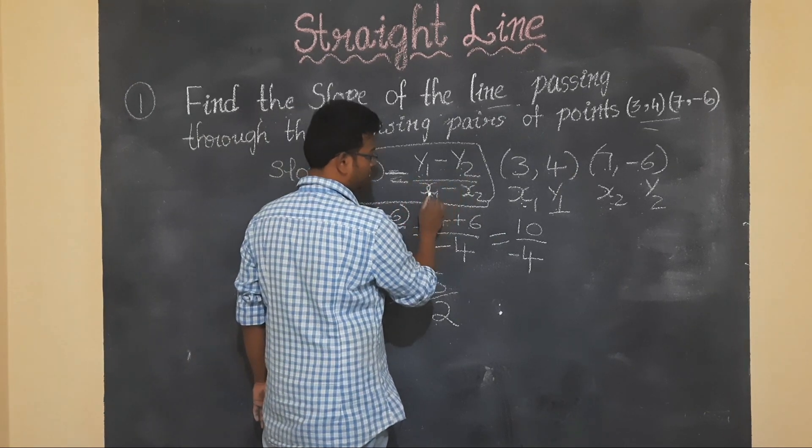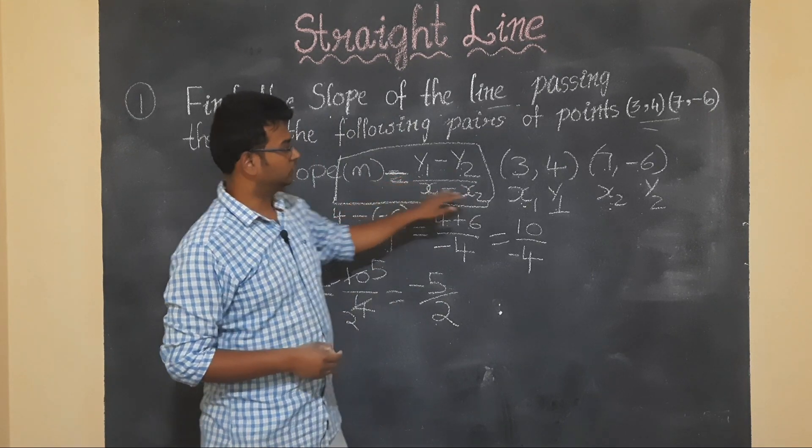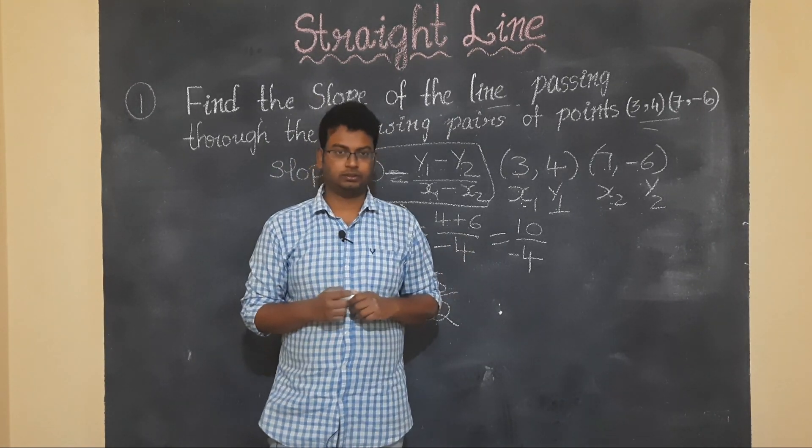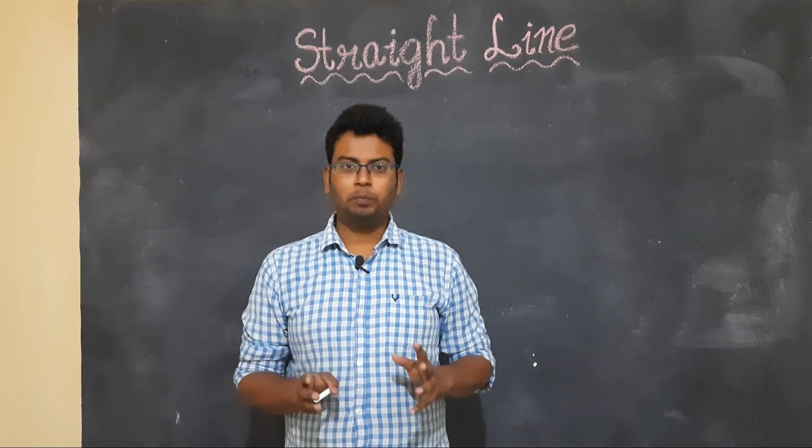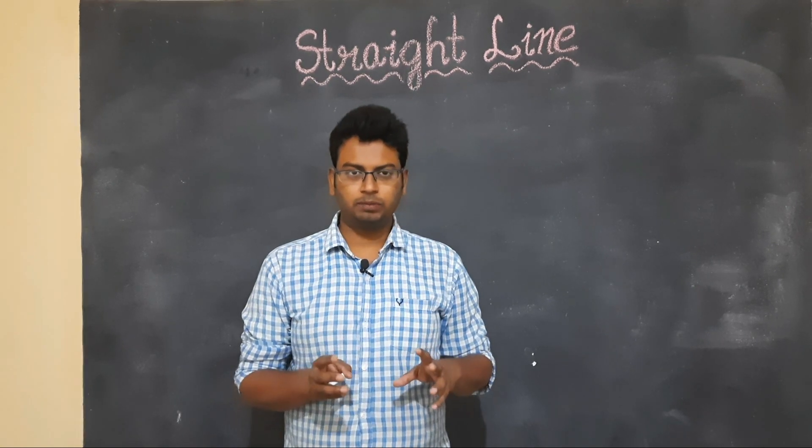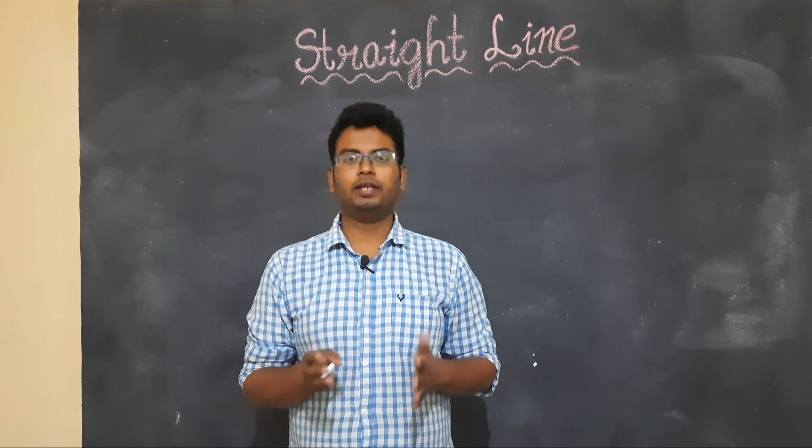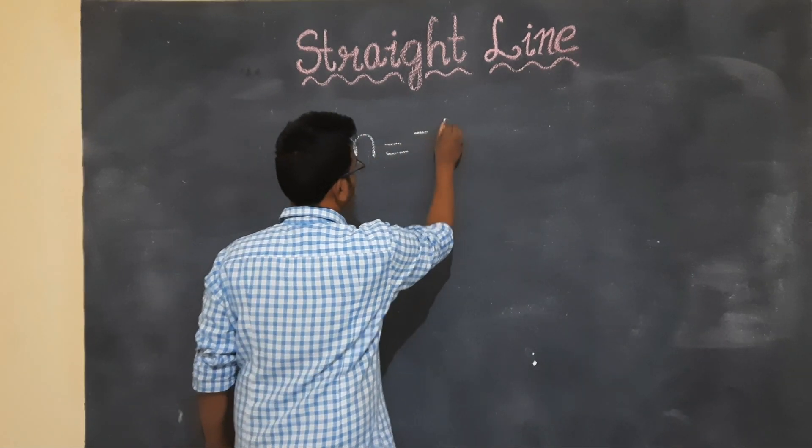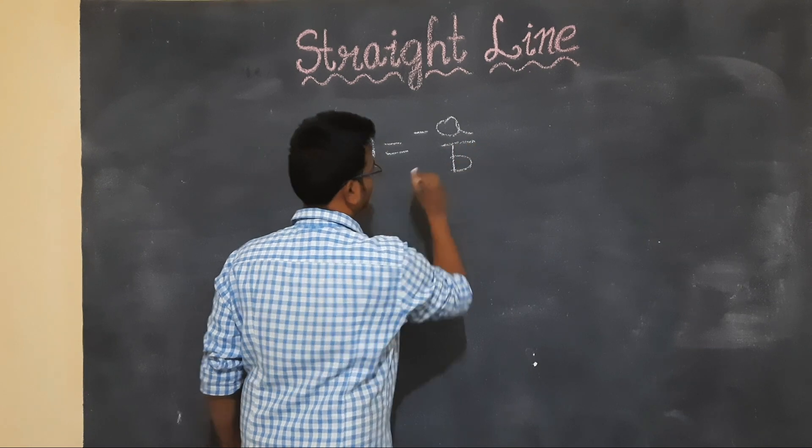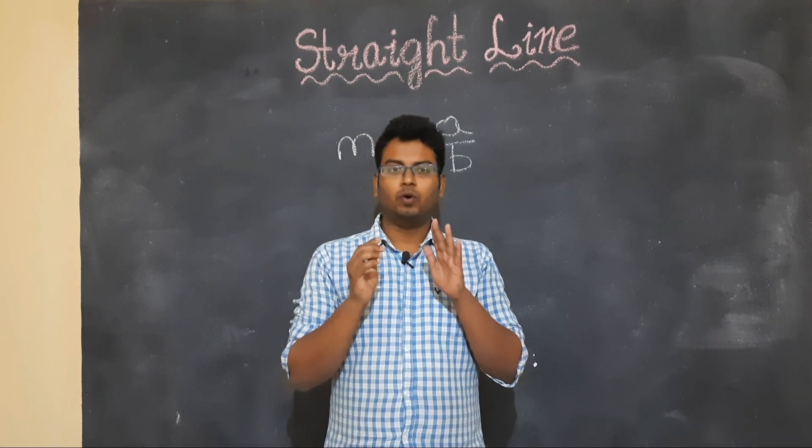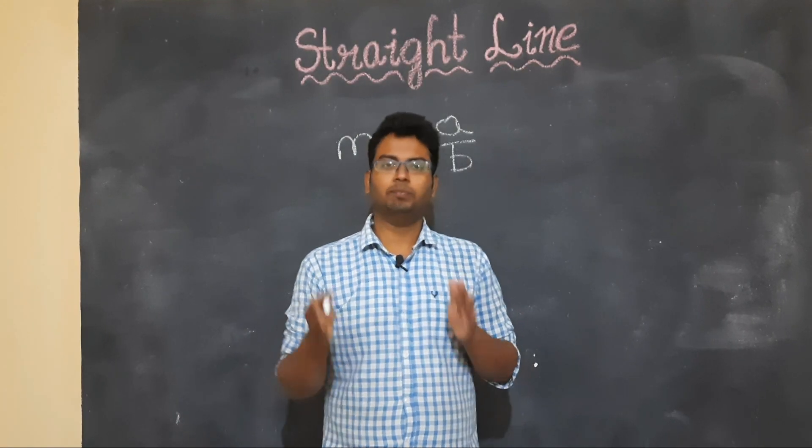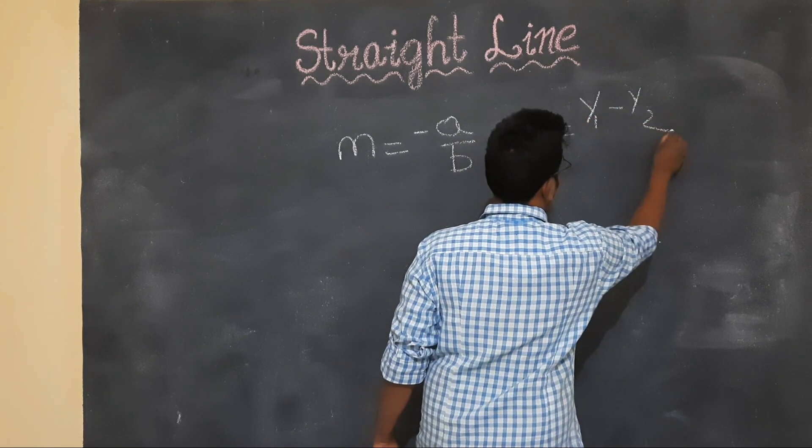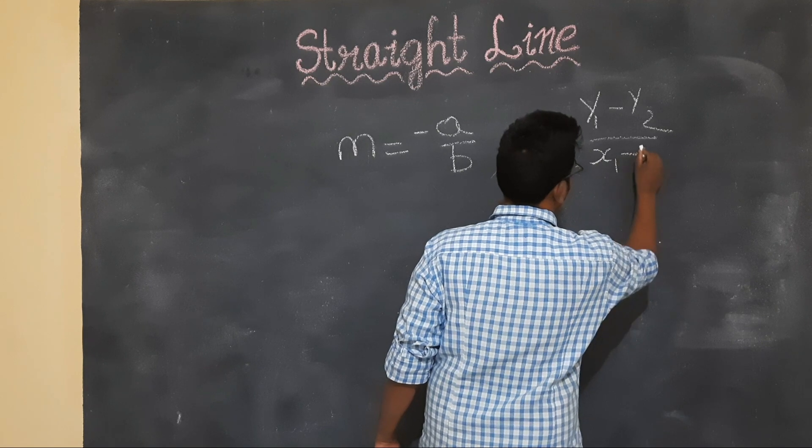y1 minus y2 by x1 minus x2. So this formula based, we substitute two points, solve it, and we'll find the slope. Clear students? So students, we learned that when equation is given, we use formula m is equal to minus a by b.